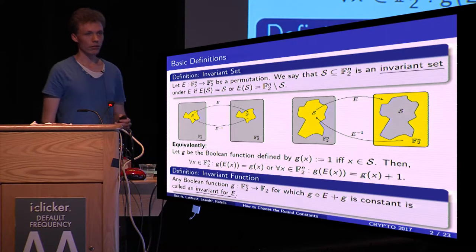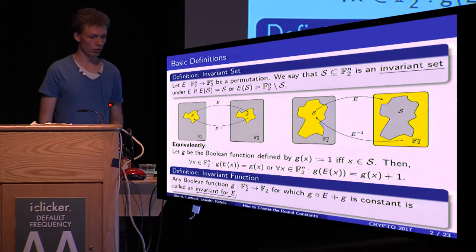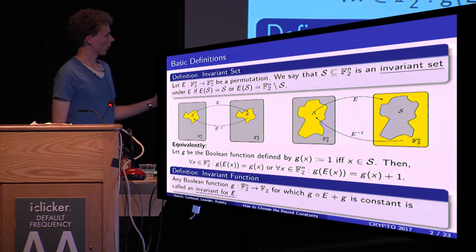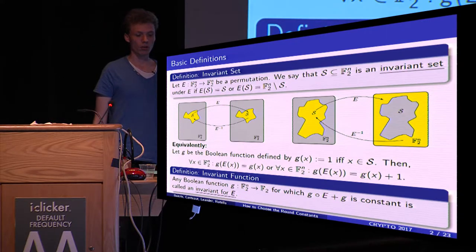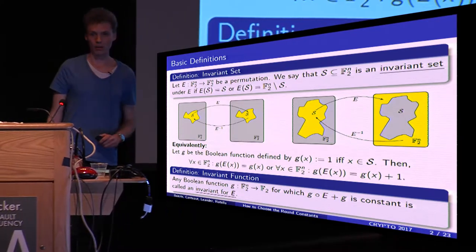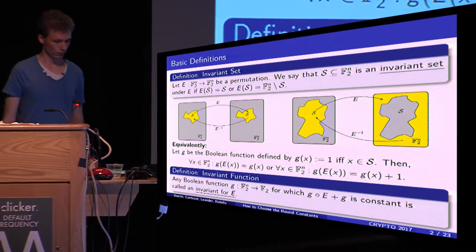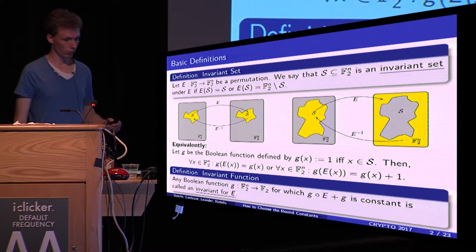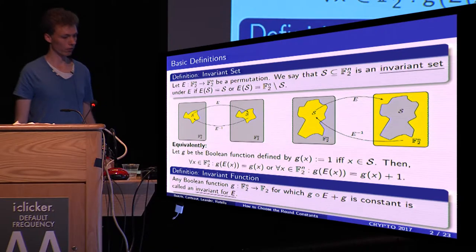This leads to the definition of an invariant function: a Boolean function G on n bits for which G evaluated on E of X plus G of X is constant is called an invariant for E. We use this term 'invariant' throughout the remainder of this talk.